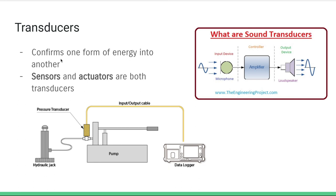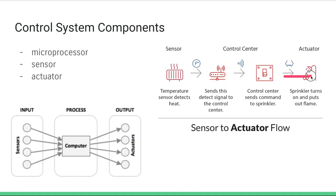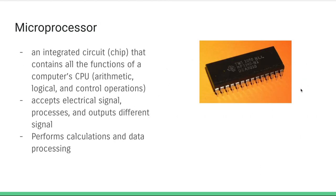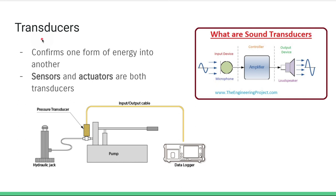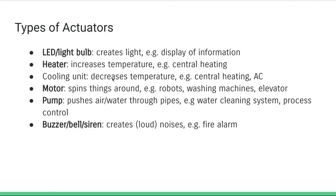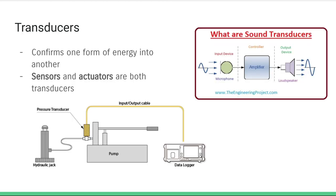Transducers convert one form of energy into another. For example, a heat sensor takes heat energy and converts it into an electrical signal. A microphone takes sound energy and converts it into electrical energy, which is fed into a microprocessor. An actuator similarly takes electrical energy from the microprocessor and converts it — in some cases to sound energy, or to physical energy to push water out onto a flame. So transducers convert one form of energy into another, and both sensors and actuators are examples of transducers used in every control system.